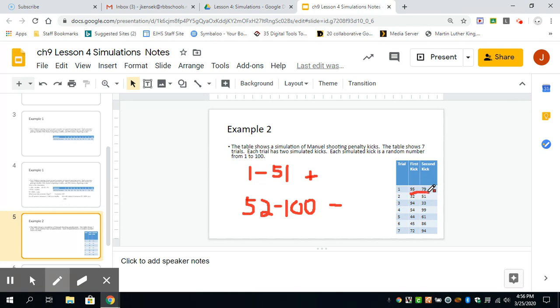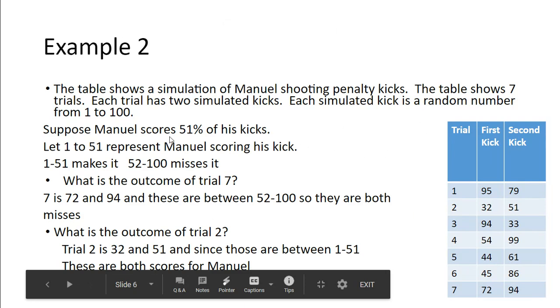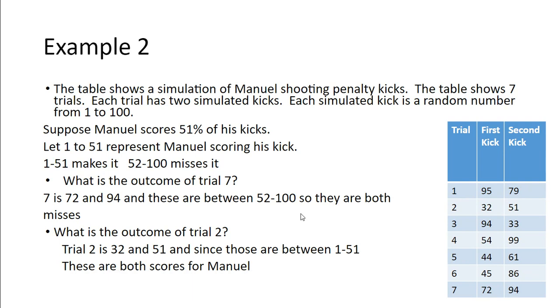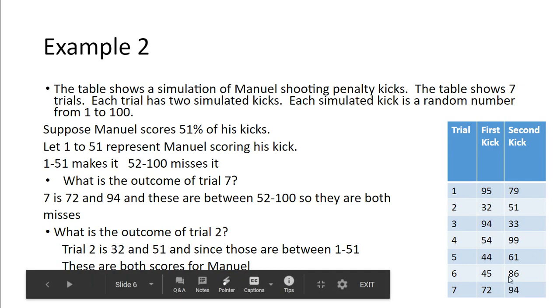So if we look here, those are both going to be misses, right? Anything up here is a miss. 95 and 79 are both over that. These two were both makes. Here he's got a miss followed by a make because 33 is in between 1 and 51. So that's where those numbers are coming from. So if I move on to this next slide, what is the outcome of trial 7? So if you come down here to trial 7, 72 and 94, those are both over that 51%. And we know from 1 to 51 is whenever he makes it. So 52 to 100, so trial 7 are both misses because they are both over 51. And then trial 2, we have 32 and 51, and all the way up to 51 are considered your makes. So these are both yeses. He made both of these. So trial 7 he missed both, trial 2 he made both.